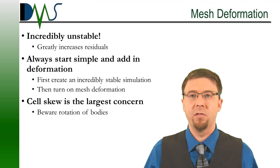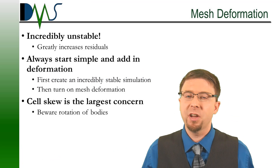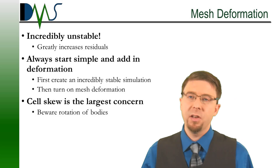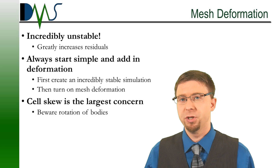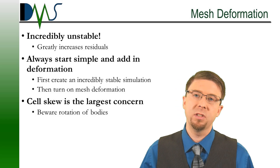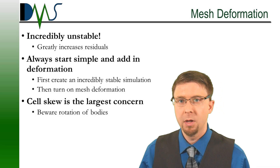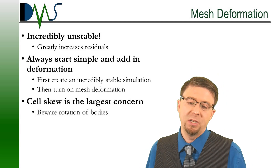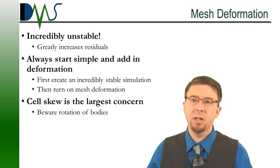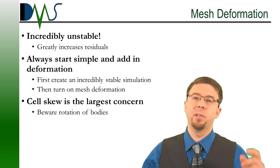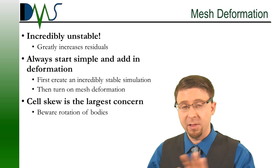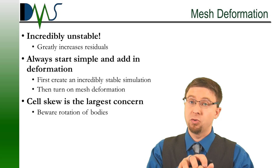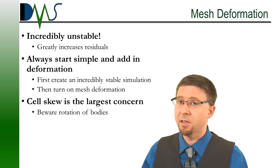This introduces a lot of problems. Rule number one: mesh deformation makes your simulation incredibly unstable. It's going to greatly increase your residuals. Definitely use your monitors as your primary tool for judging simulation convergence. Also get a strong, stable simulation before you turn on mesh deformation — start simple and then add in the complexity. The reason mesh deformation adds so much instability is because we go from having velocity in our cells to a relative velocity. Everything is now relative to the cell velocity itself, so we have a grid velocity added on top of our actual solved momentum equations. Everything becomes relative, and that's a strong coupling that applies to every single cell in our domain — that's a lot of instability.